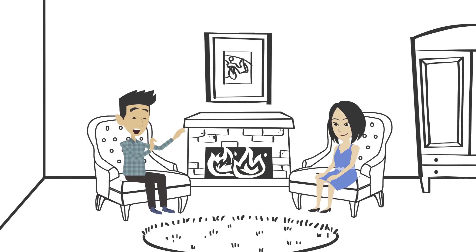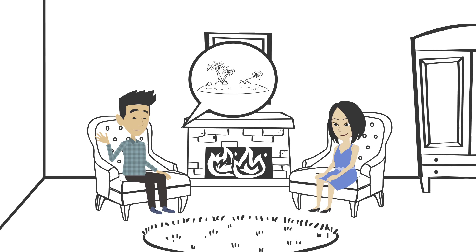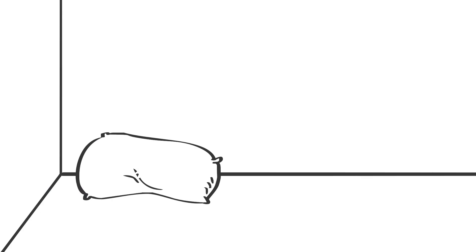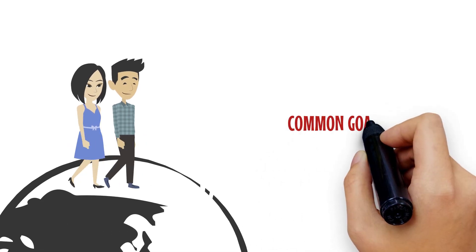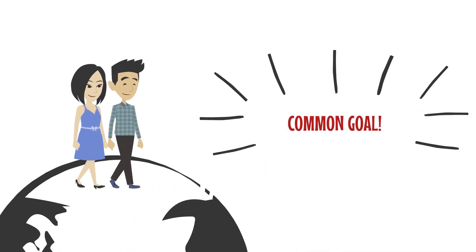For instance, you can sit down together and plan a dream vacation to a place you both have always wanted to visit. You can research different destinations and activities to do and make a rough itinerary. This not only gives you something to look forward to, but also allows you to work together towards a common goal.